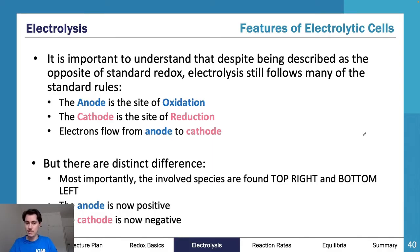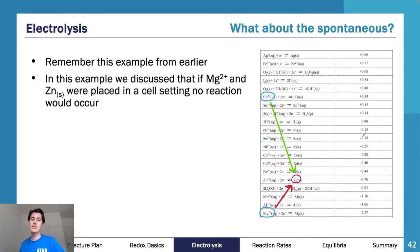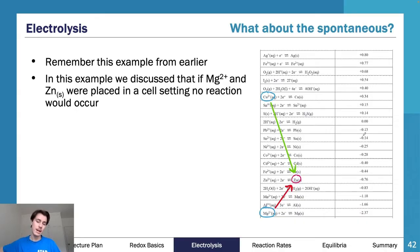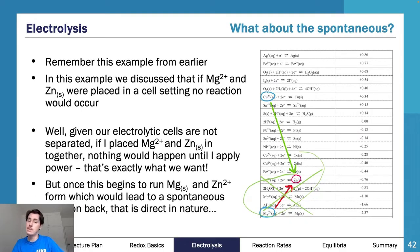There's a table comparing galvanic and electrolytic processes - take a screenshot if you like. Returning to an earlier example: magnesium 2+ and zinc solid placed in a cell setting would produce no reaction. We discussed this about 20 minutes ago - these two together won't react, it's not going to happen. However, in electrolysis this is different.